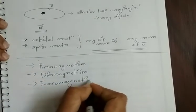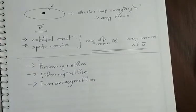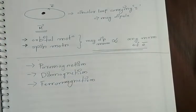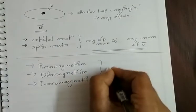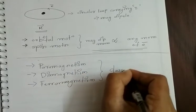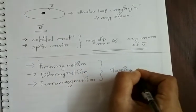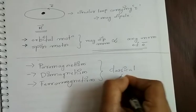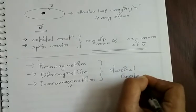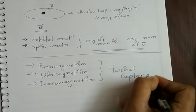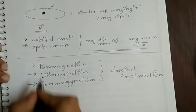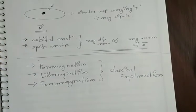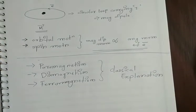We have to discuss these three important properties, and we are discussing them in terms of classical explanation. We are not moving to the quantum explanation. So let us discuss these three topics separately.